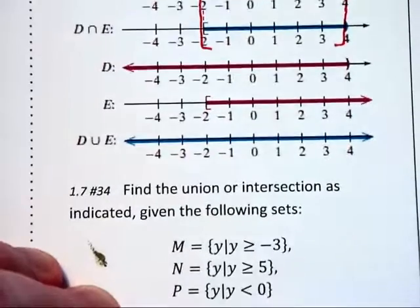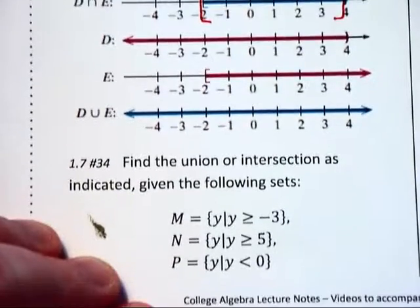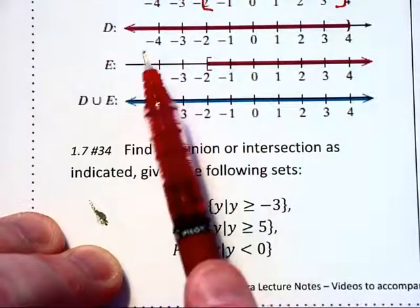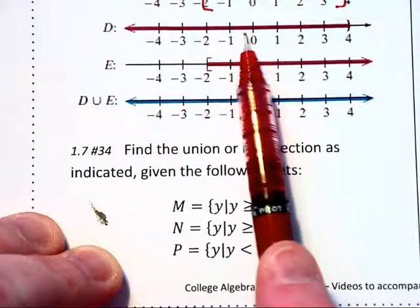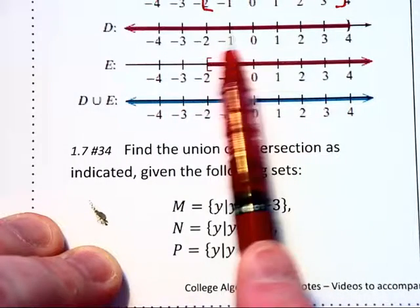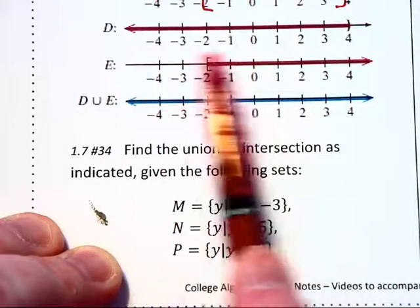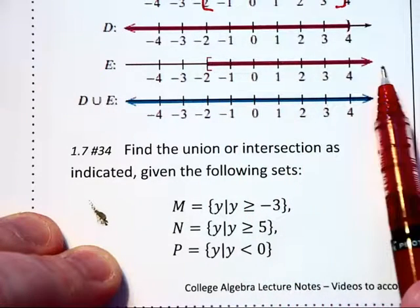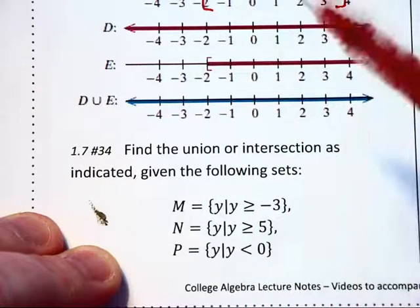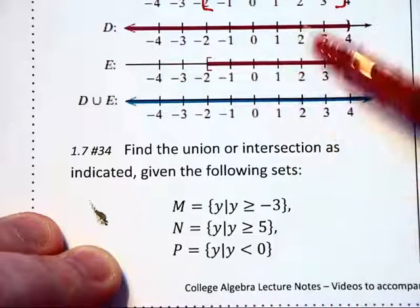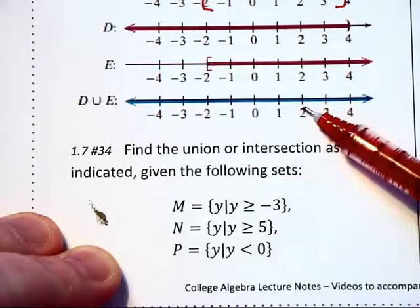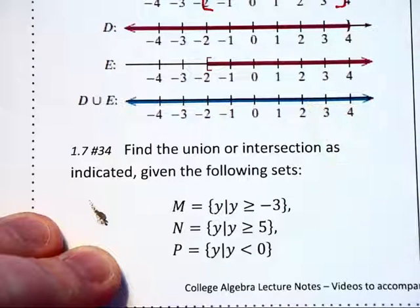When you are finding the union of sets D and E, we are joining them together. Set D has everything going to the left, set E has everything going to the right, and we include their intersection — which gives us all real numbers for that combination.